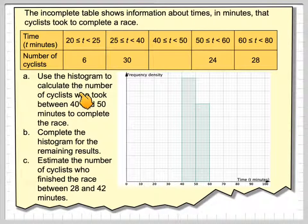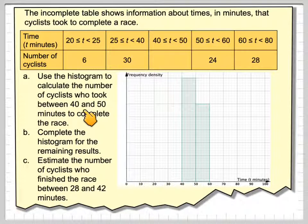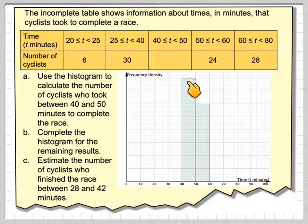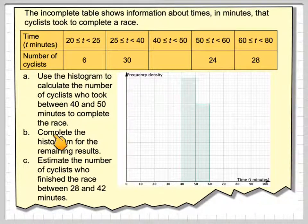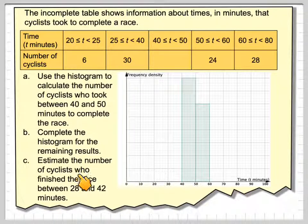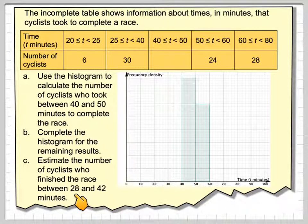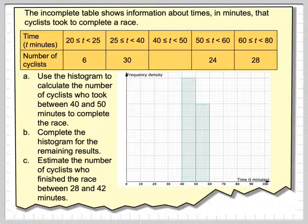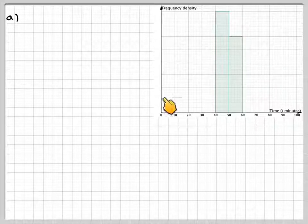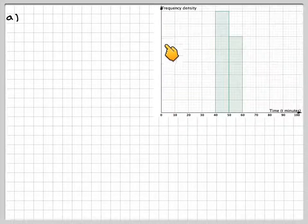It says use the histogram to calculate the number of cyclists who took between 40 and 50 minutes to complete the race. So basically, we've got to find how many in this particular category here. Now, the problem here is that we actually have no vertical scale on this histogram, so we actually have to find it using the information given.